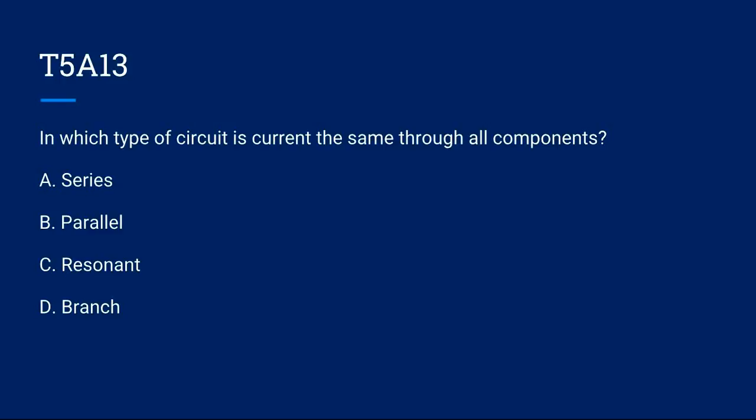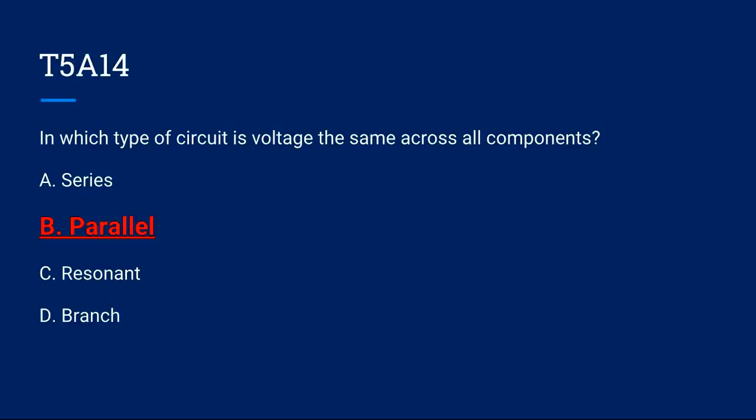T5A13, which type of circuit is current the same through all components? A. Series, B. Parallel, C. Resonant, or D. Branch? The correct answer is A. Series. T5A14, in which type of circuit is voltage the same across all components? A. Series, B. Parallel, C. Resonant, D. Branch? The correct answer is B. Parallel.